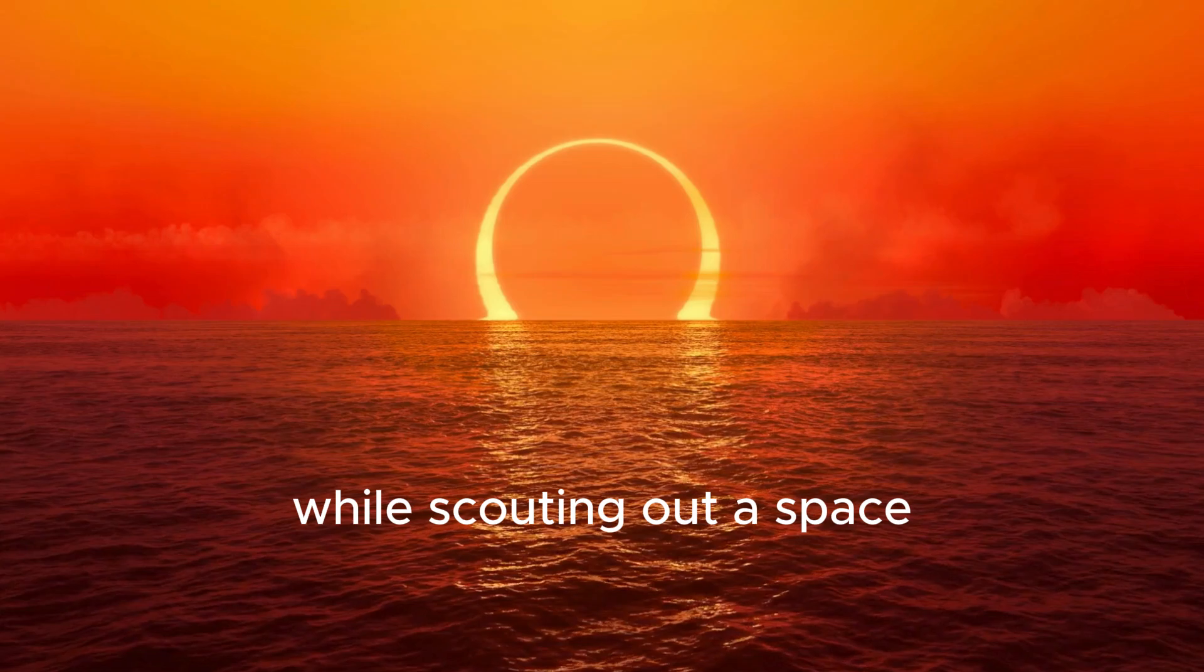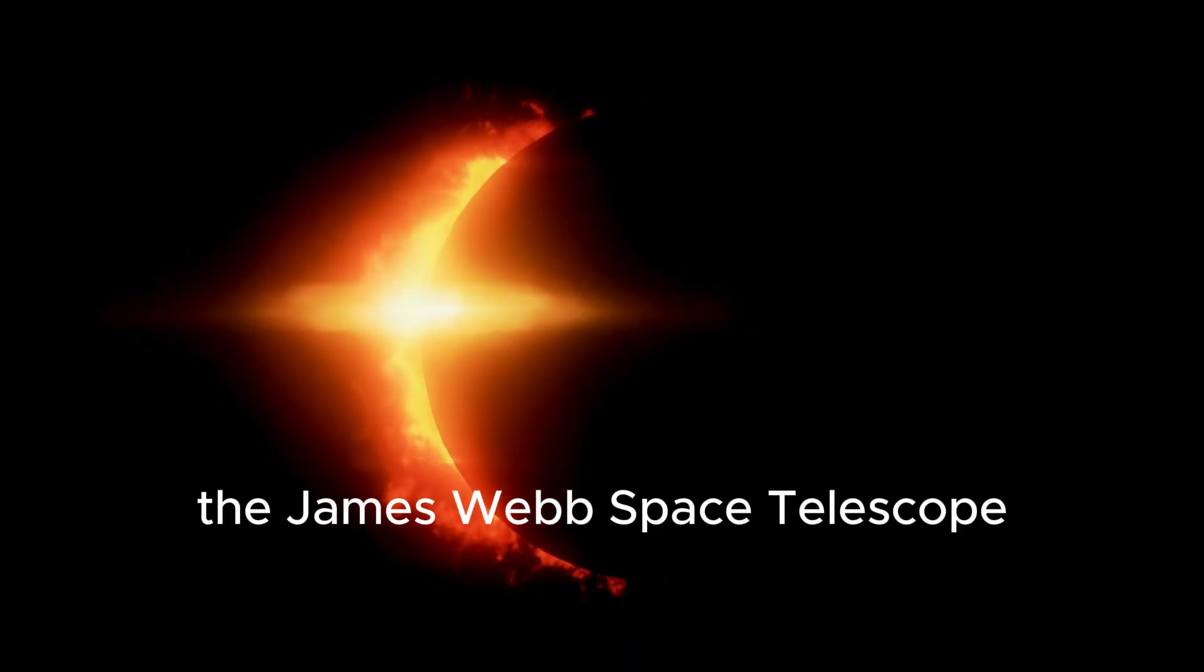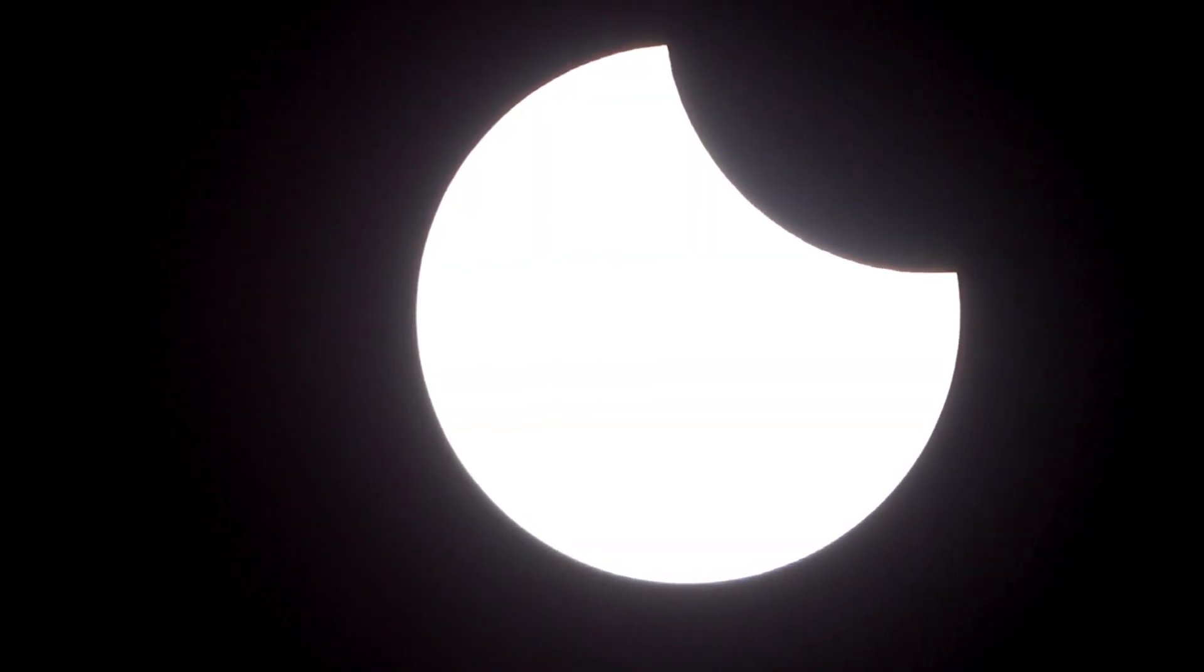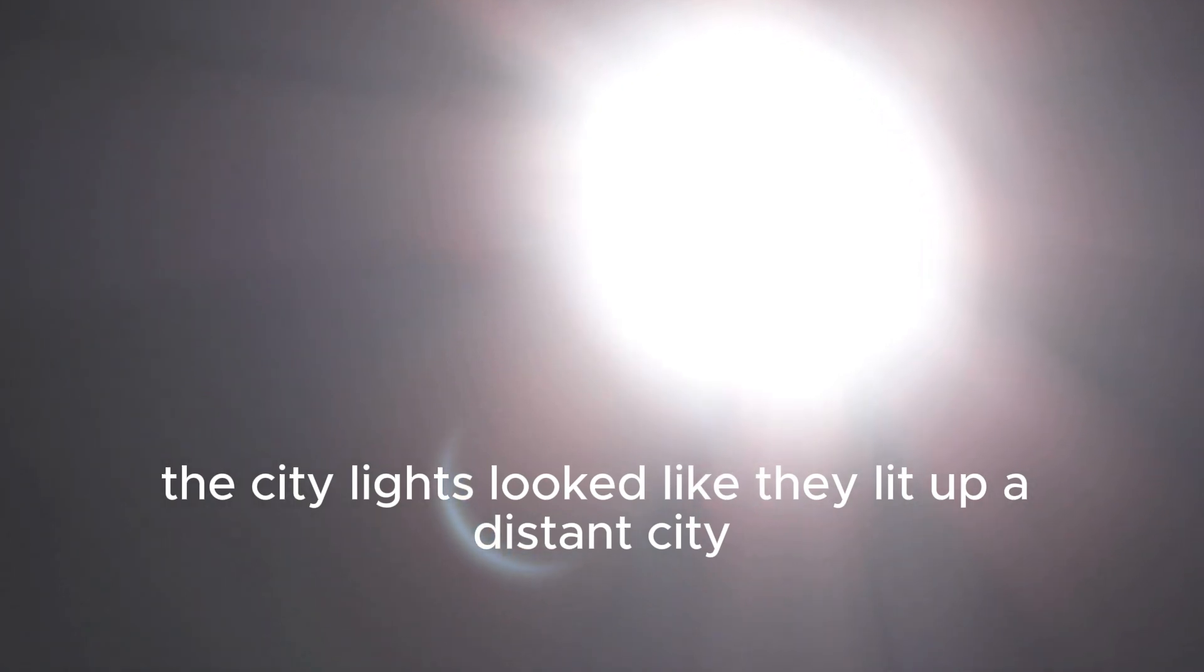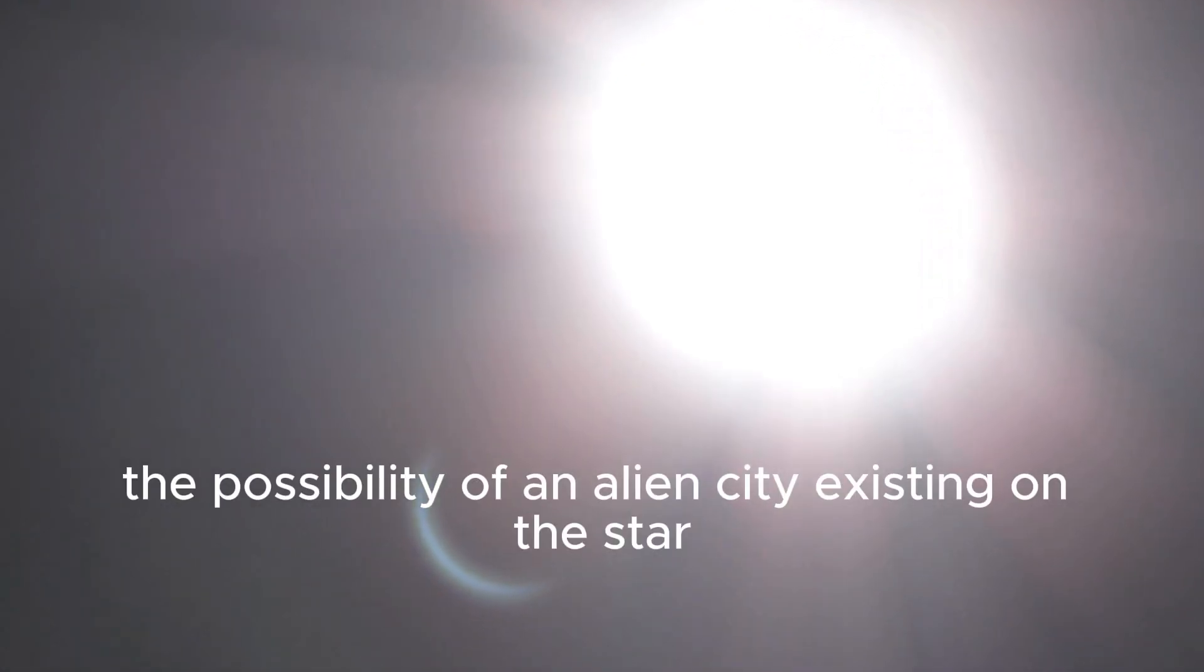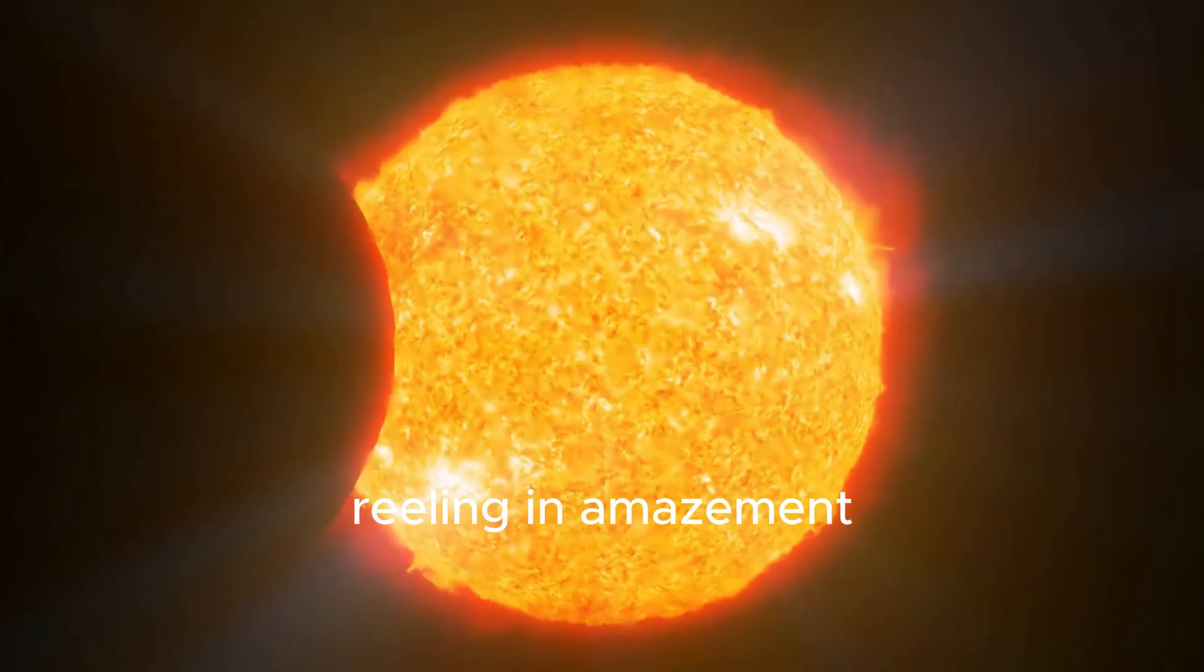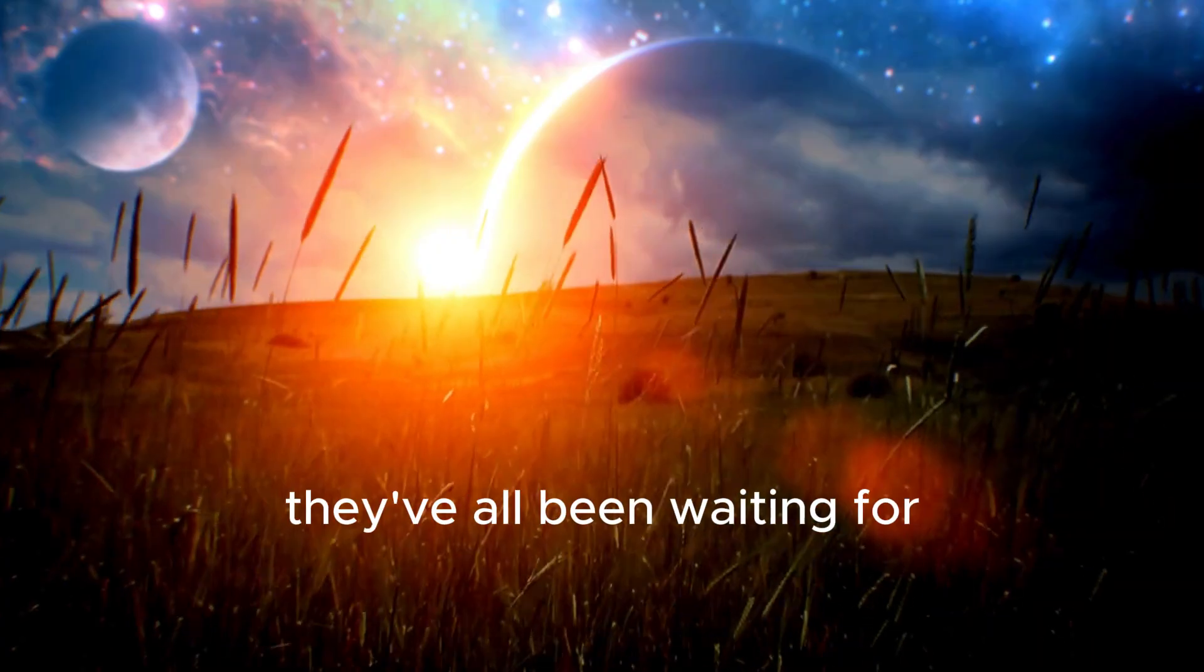While scouting outer space, the James Webb Space Telescope noticed strange city lights shining from the exoplanet Proxima Centauri b. The possibility of an alien city existing on the star has left scientists reeling in amazement.